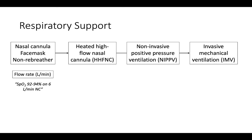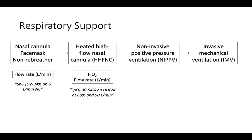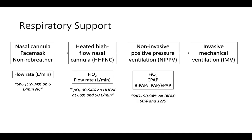For heated high-flow nasal cannula, we report the percent FiO2 and flow rate in liters per minute. For example: oxygen saturation 90 to 94% on heated high-flow nasal cannula at 60% and 50 liters per minute. For non-invasive positive pressure ventilation, we report the percent FiO2 and pressure settings. For CPAP, this requires reporting a single continuous pressure. For BiPAP, we need to report both the IPAP — the inspiratory positive airway pressure — and the EPAP, the expiratory positive airway pressure. For example: oxygen saturation 90 to 94% on BiPAP 60% and 12 over 5, where IPAP is 12 and EPAP is 5.